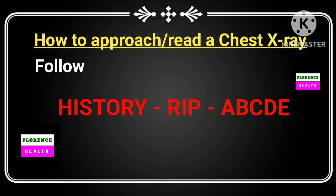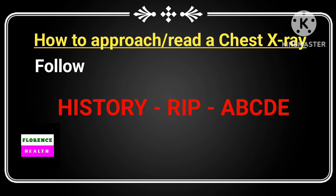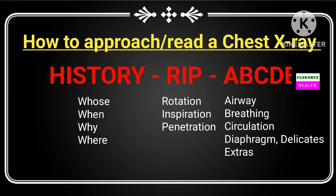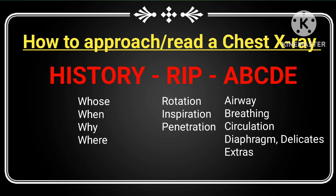For examination of chest X-ray it contains three sections. The first section is history, which I have already discussed — it contains why, when, whose and where. The second section is RIPE: R for rotation, I for inspiration, P for penetration, which I have already discussed. Now, coming to the third section: I have already discussed examination of airway. Today we will discuss examination of lungs, which is examination of breathing itself.